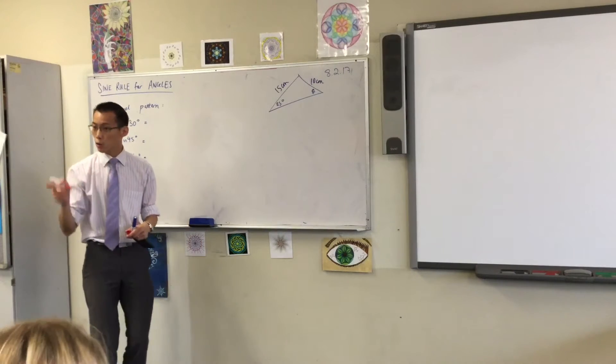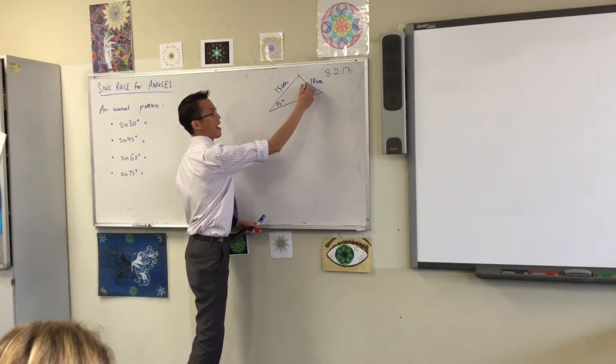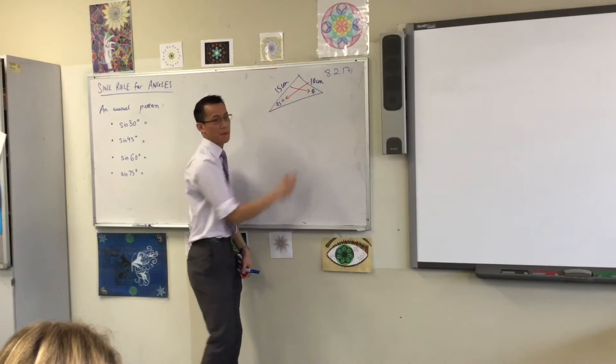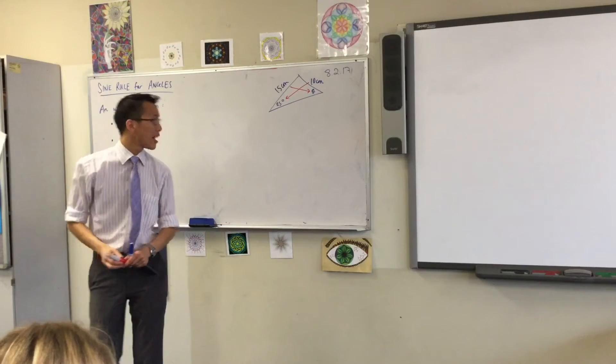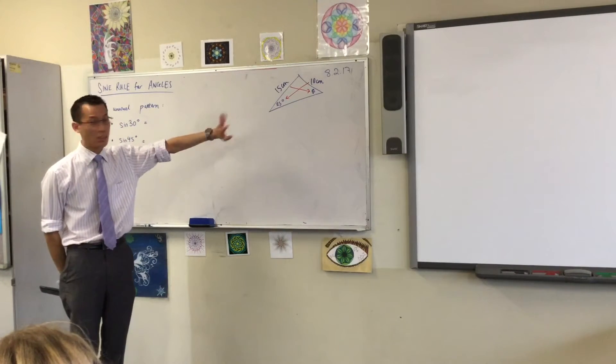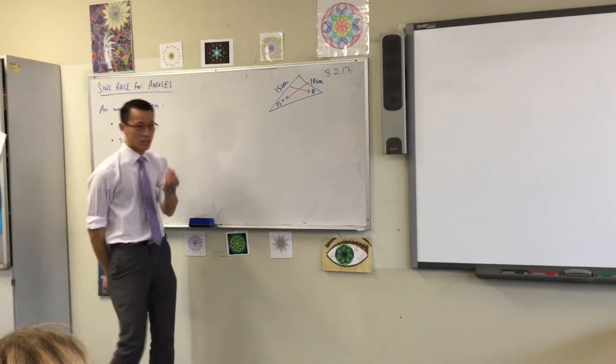We can say, oh look, I have an angle opposite a side and I'm interested in another angle opposite a side. So in this case I could write—well, what would we write actually? Just have a look at it. Just say it with me. What's the thing I'm looking for?